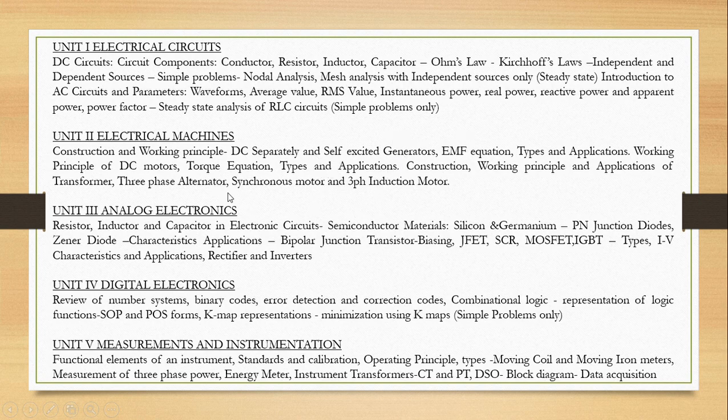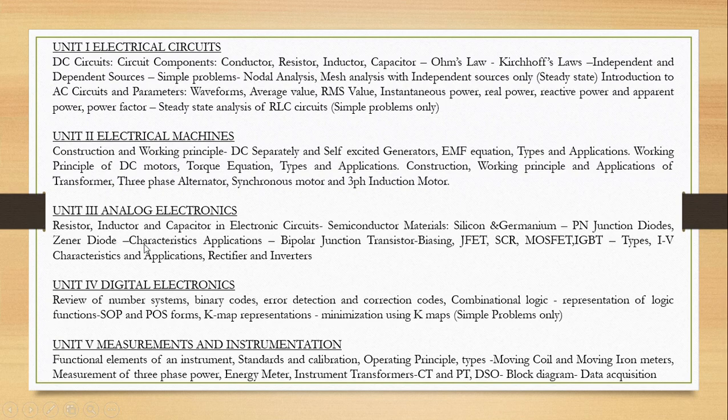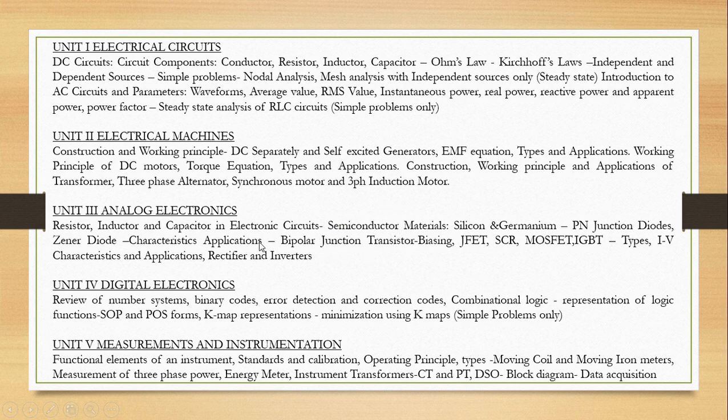We have to know and understand about this. And the third unit is analog electronics. In this unit, basic concepts of resistor, inductor and capacitors are given. And the main concept of this unit is to know the concept of semiconductor devices such as PN junction diode, Zener diode and BJT and its types. Also MOSFET SCR, IGBT along with its characteristics and applications. All these details are given in unit number 3.